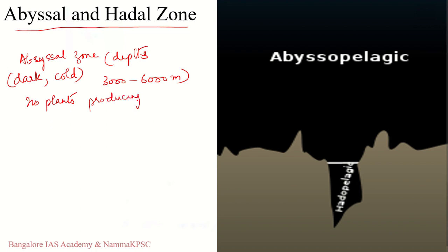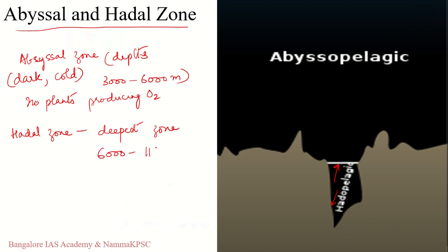The hadal zone is the deepest region of the ocean, lying within the oceanic trenches beyond the abyssal zone, at a depth of around 6,000 to 11,000 meters. It forms the deepest part of the oceans, found within the oceanic trenches.